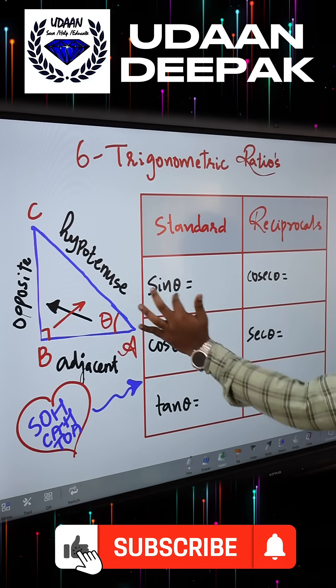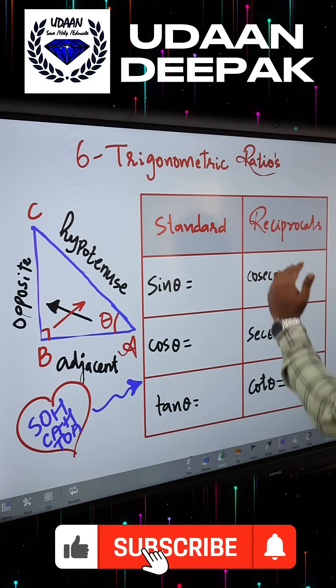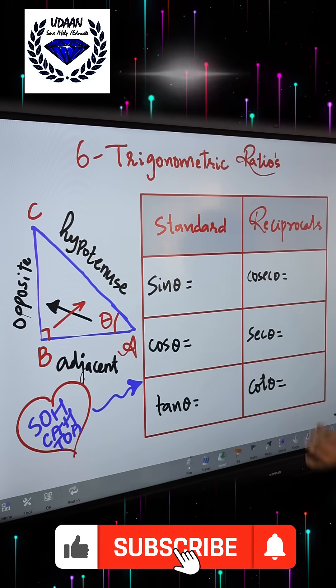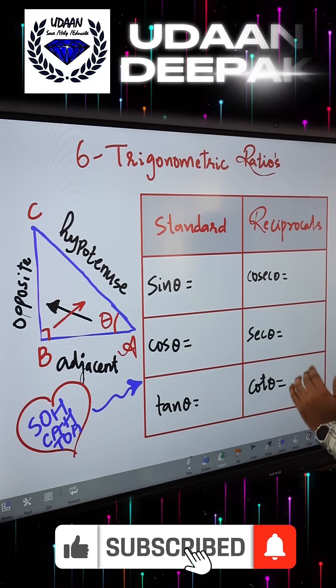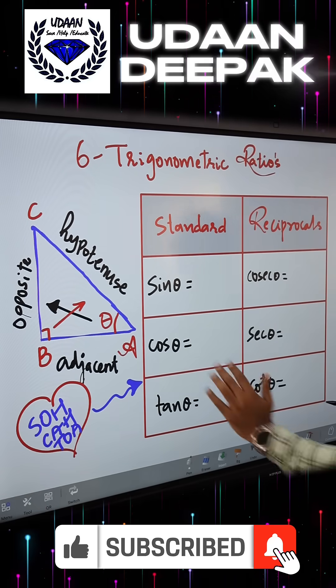The three standard ratios are sine, cos, and tan, and the three reciprocals are cosec, sec, and cot.